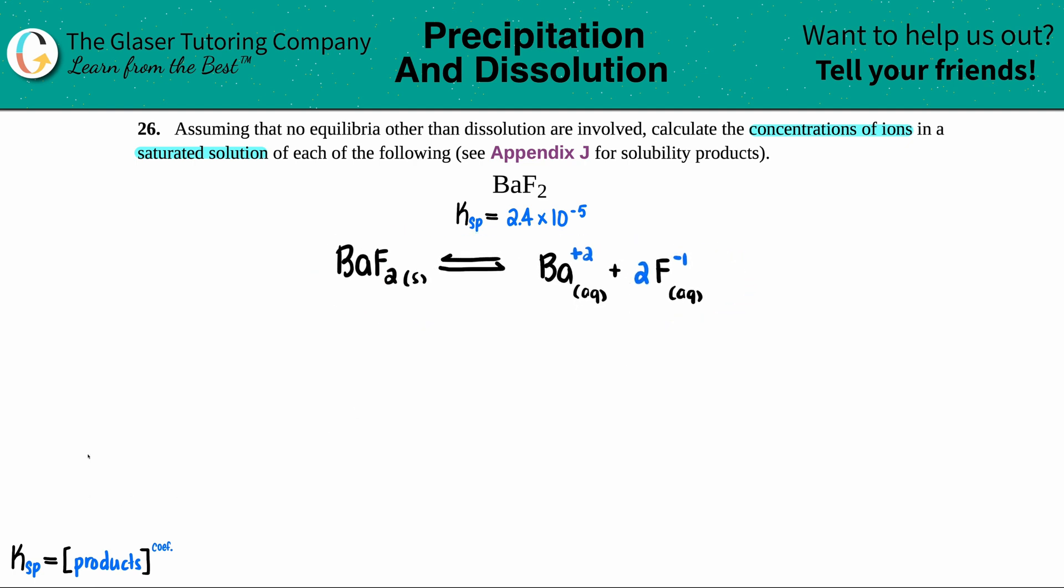The next thing is I'm just going to now make the general equation for our Ksp equation. Ksp only equals the products because no solids allowed. So Ksp equals the concentration of the barium times the concentration of the fluorine.